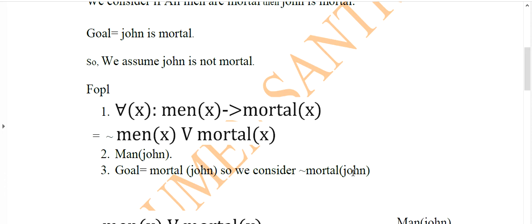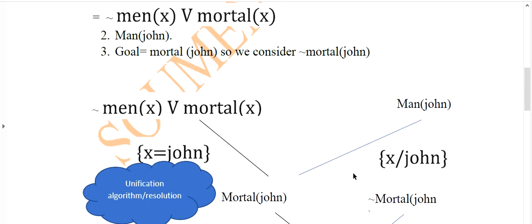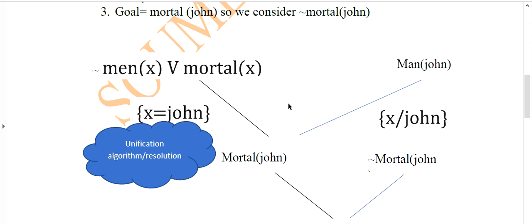We use these four statements, and if we get null or phi, then we can say our resolution is solved. We combine negation man(X) OR mortal(X) with man(John). Setting X equal to John, we get negation man(John) OR mortal(John). Then negation man(John) and man(John) eliminate each other, giving us mortal(John). Then mortal(John) and negation mortal(John) eliminate each other, and we get phi. So we can say it is proved — if we get phi, our resolution is solved.